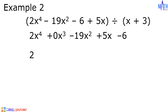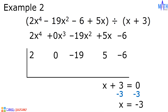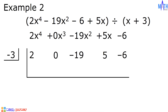And we have 2x to the 4th plus 0x cubed minus 19x squared plus 5x minus 6. The coefficients are 2, 0, negative 19, 5, and negative 6. For the divisor, x plus 3 is of the form x minus k, where k is equal to negative 3. Or we can equate x plus 3 to 0. Adding negative 3 to both sides, x equals negative 3. We will write negative 3 on the left side, and this is the setup.